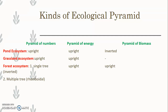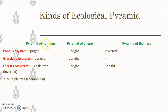There are many types of Ecological Pyramids — pyramid of number, pyramid of energy, and pyramid of biomass. In different ecosystems, the pyramid structures will be different.